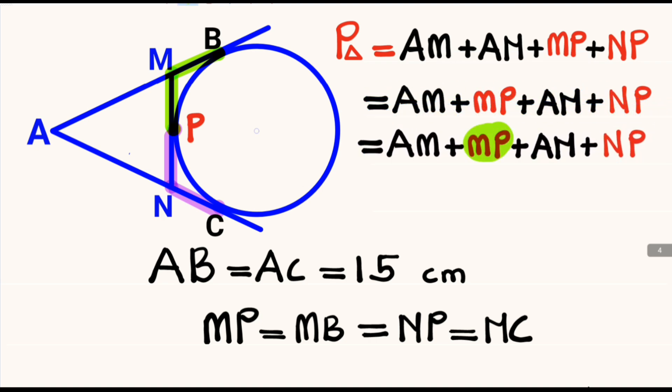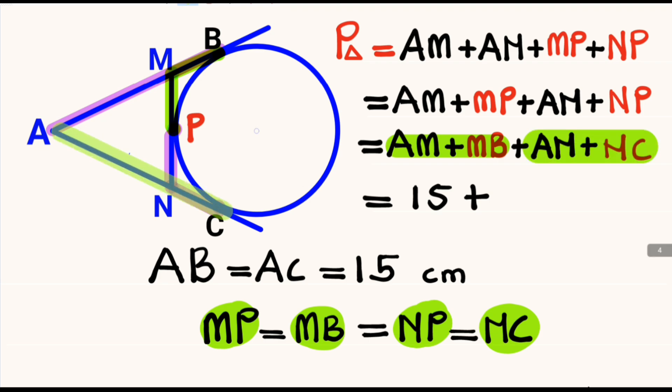We already said that MP equals MB and NP equals NC. So in place of MP, let's substitute MB, and in place of NP, we substitute NC. AM plus MB equals the length AB, which equals 15, plus the length AN plus NC equals the length AC, which is also equals 15.